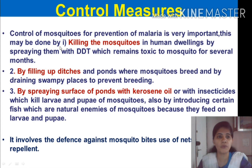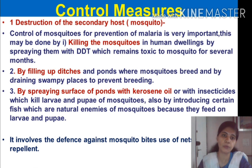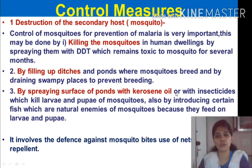The first control method is killing the mosquitoes by spraying dwellings with DDT, which remains toxic to mosquitoes for several months. Another method is destruction of the secondary host — the mosquito — by filling up ditches and ponds, since mosquitoes breed in water and lay their eggs there. By eliminating such water bodies, we remove places for the mosquito to lay its eggs. Another approach is spraying the surface of ponds with kerosene oil or insecticides to kill larvae.